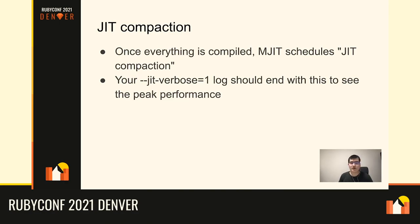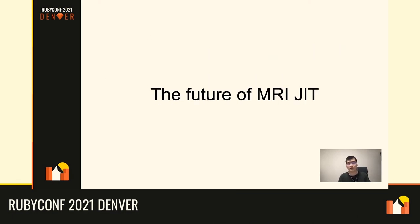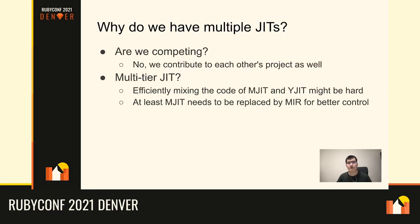JIT compaction is a technique used after every method has been compiled at least once. Once, say, 4,000 methods are all compiled, MJIT tries to compact them into a very compact code location. This deduplicates shared functions between different methods, making code size much smaller, which is great for CPU cache efficiency. This shows up in the logs as "jit compaction." To see peak performance, you need to see "jit compaction" appear at the end of your --jit-verbose=1 logs.